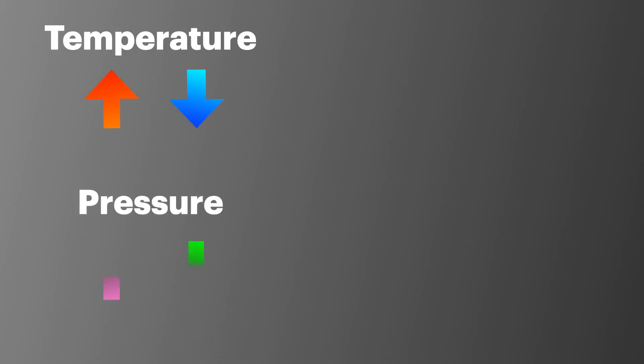Now this gas law is great if you're dealing with situations at standard temperature and pressure, but most chemical systems do not exist under these conditions. We usually see changes in temperature and pressure of the system. This is where the ideal gas equation comes in: PV equals nRT.